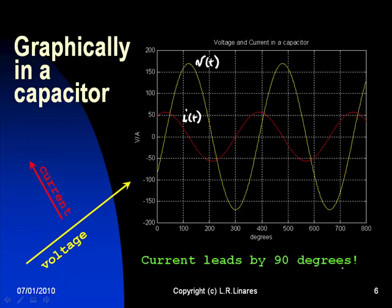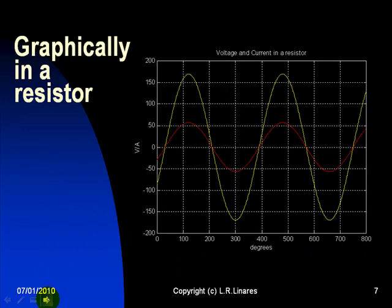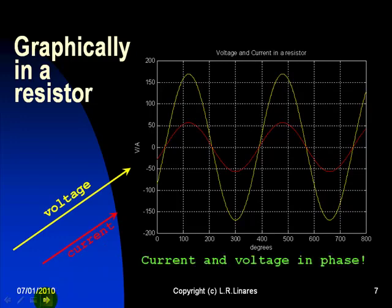For a resistor, voltage and currents have exactly the same phase and are represented by parallel phasors in the phasor domain. There is no phase shift between voltage and currents in a resistor, and I leave that to the viewer to demonstrate.